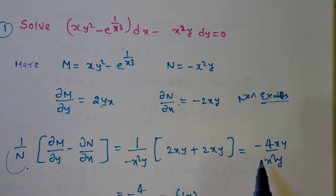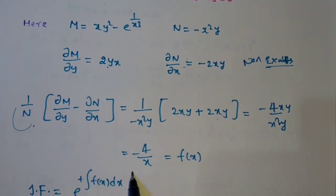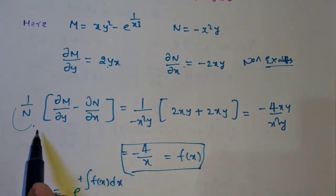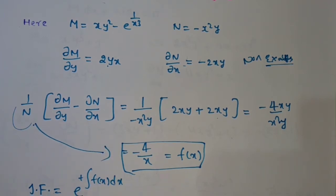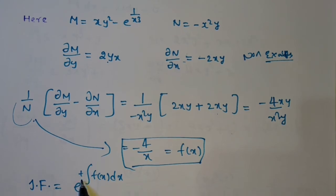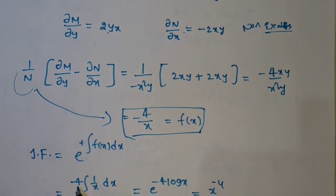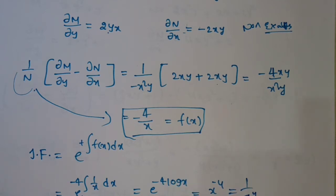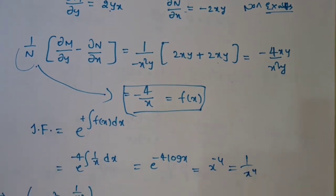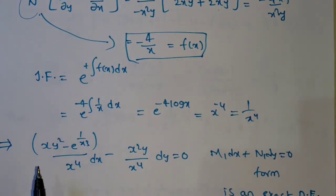Since dividing by N gives f(x) = −4/x, a function of x alone, the integrating factor is e to the power of integral f(x) dx. Integrating −4/x gives −4 log x, so the integrating factor is e^(−4 log x) = x^(−4) = 1/x⁴. Now multiply the integrating factor through the equation.